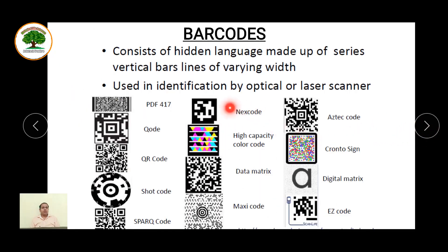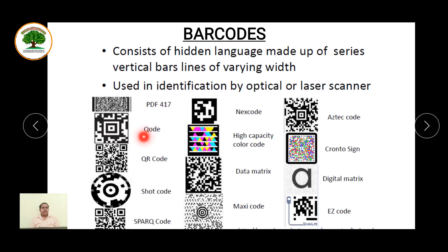A barcode consists of a hidden language made up of a series of vertical lines of varying width. It is used in identification by optical or laser scanner. There are different types of barcodes: PDF417, QR code, short code, spare code, next code, high capacity color code, data matrix, and maxi code — these are all the different examples of barcodes available today.